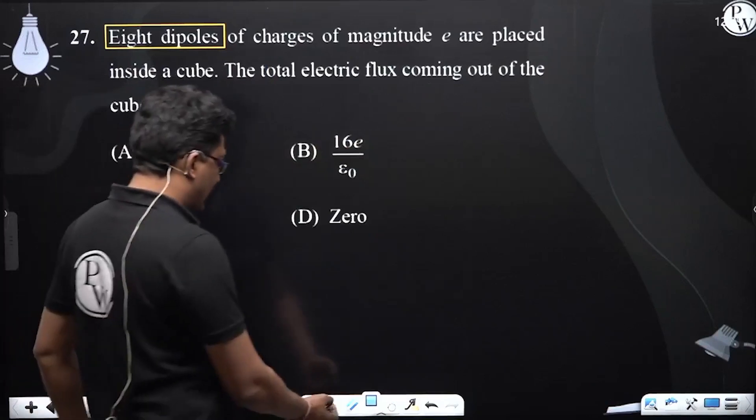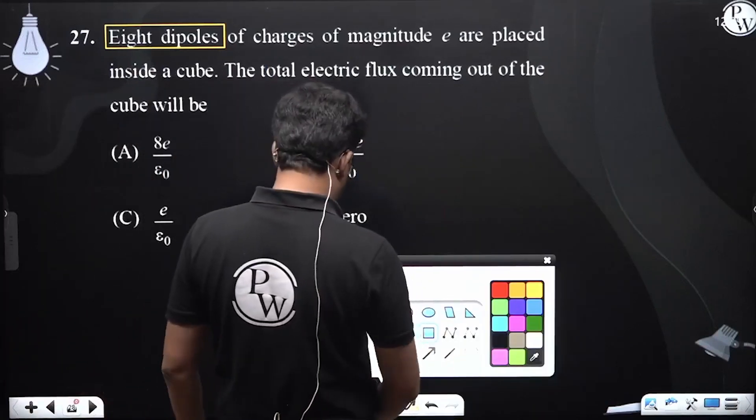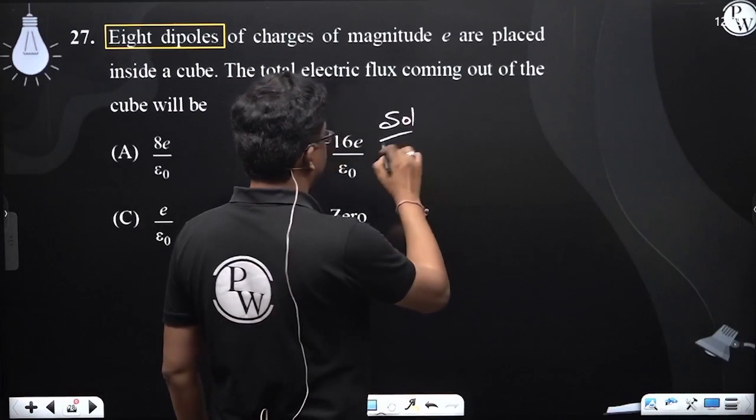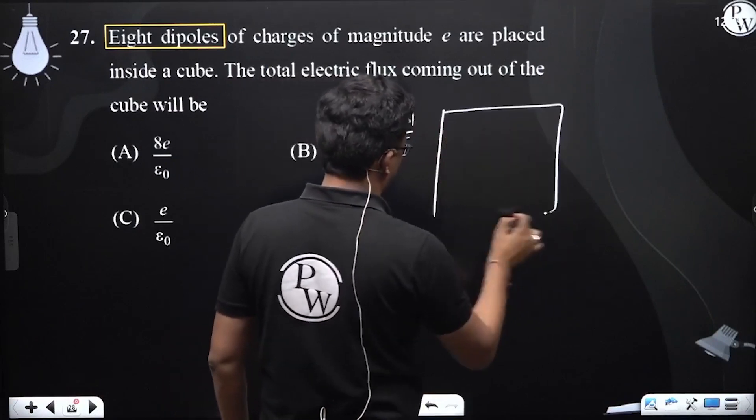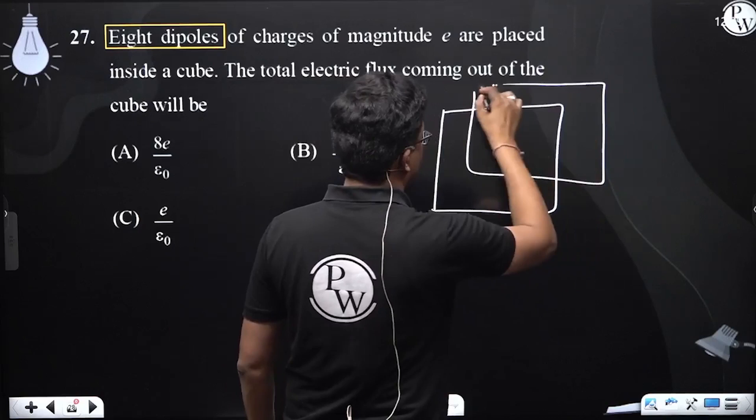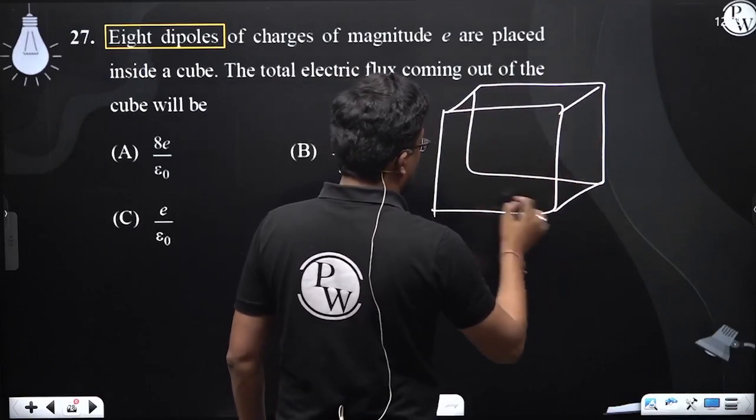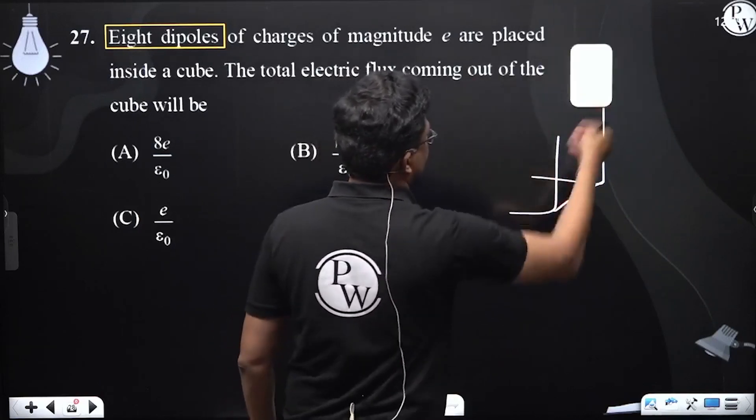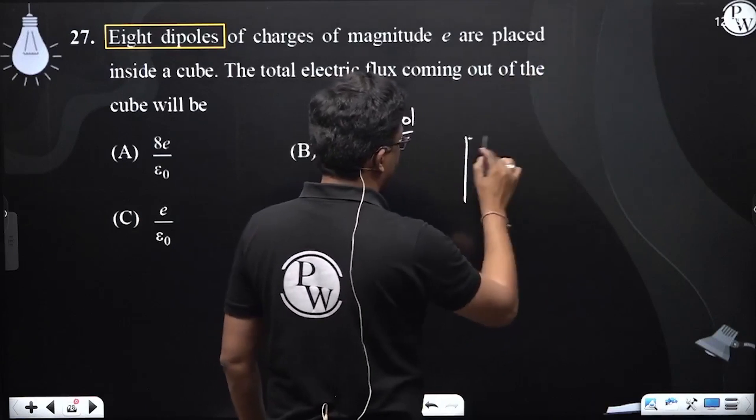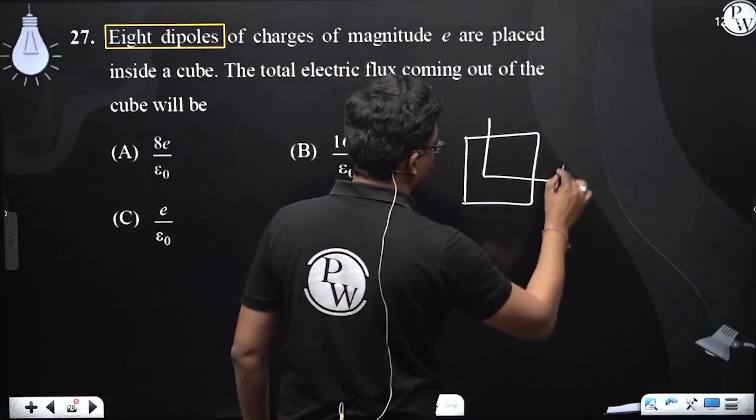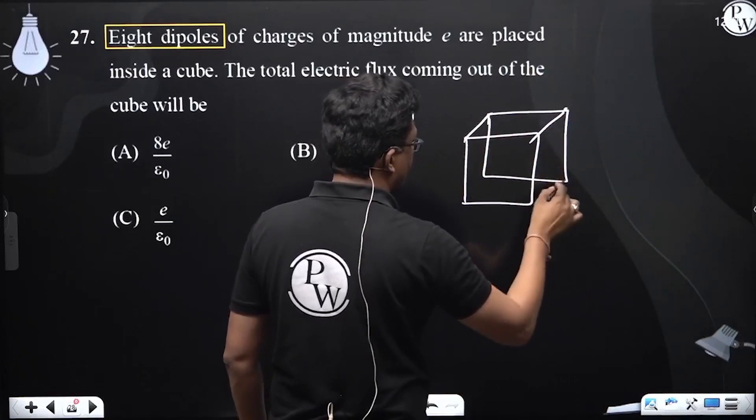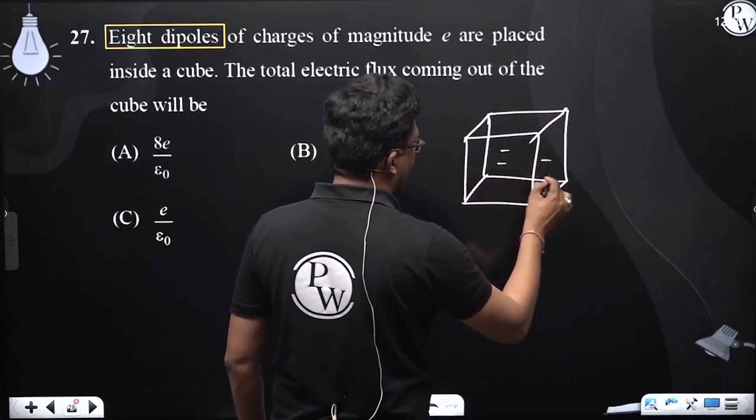If I place eight dipoles inside any cube